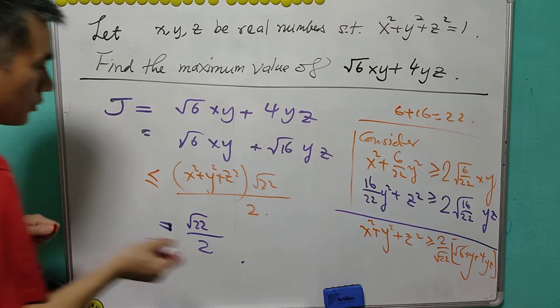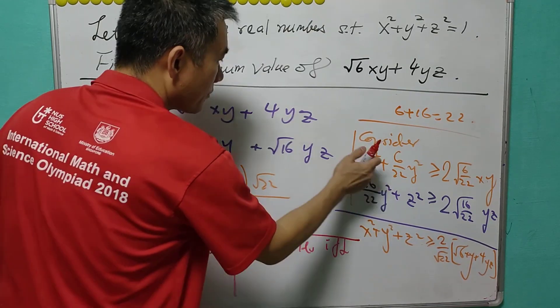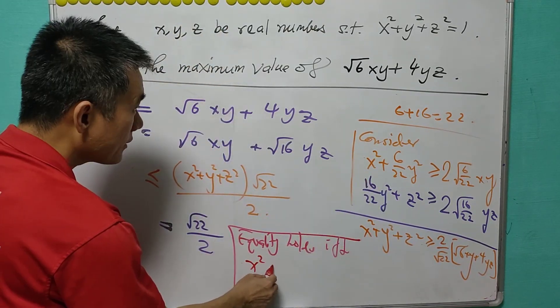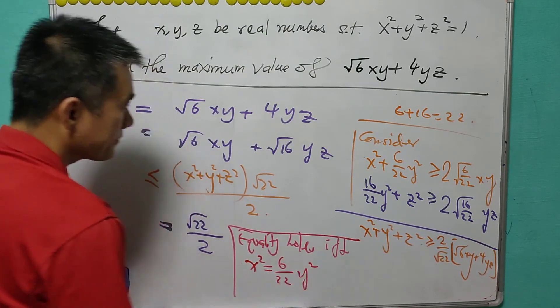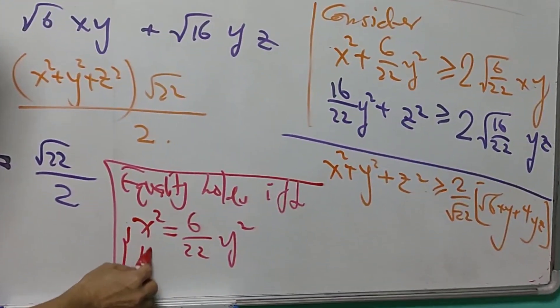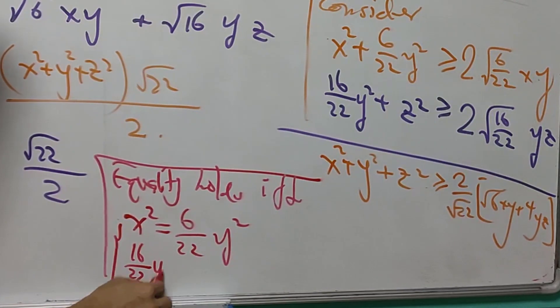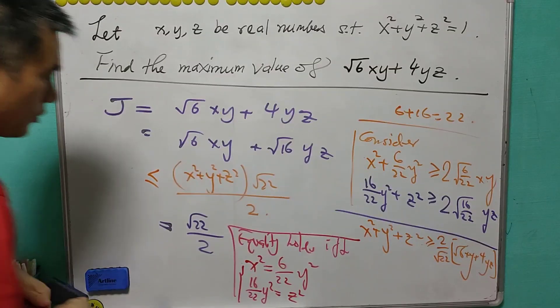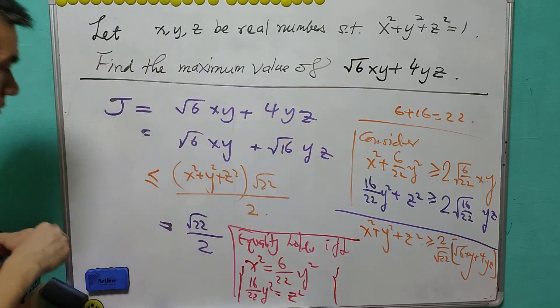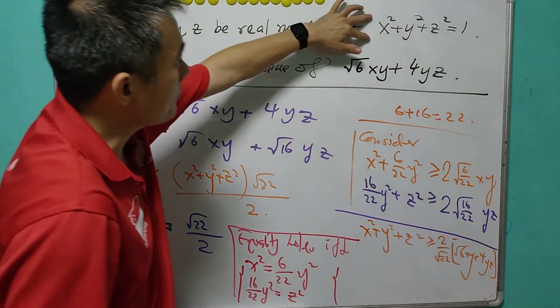The equality holds if and only if x² = (6/22)y², and (16/22)y² = z². So with this condition, we know that the sum of squares equals 1.